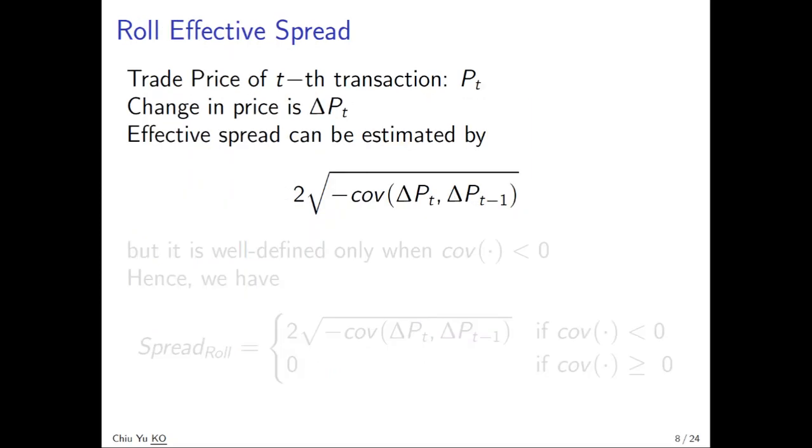These are four different measures. When you don't have high-frequency data, when you only have transaction price without the quote, then you can measure using the Roll effective spread. Later in this class, we will tell you the rationale behind this formula. But for the moment, we just know how to calculate it. For the t-th transaction, the price is P_t. We define change in price as ΔP_t, which is P_t minus P_{t-1}, the difference in price.